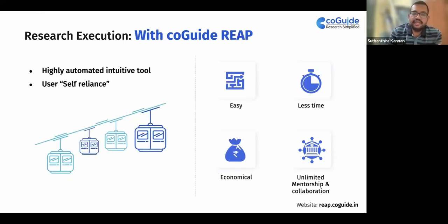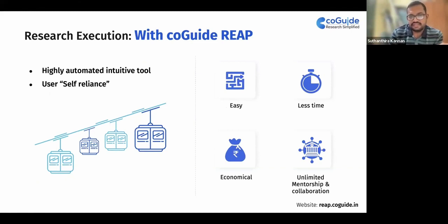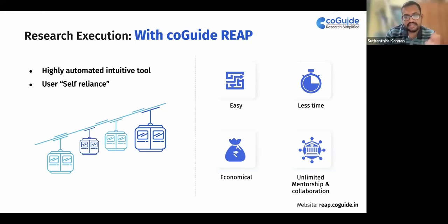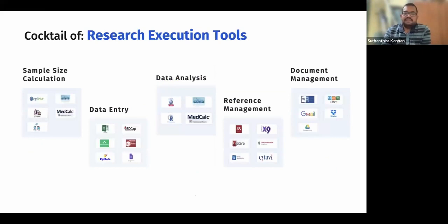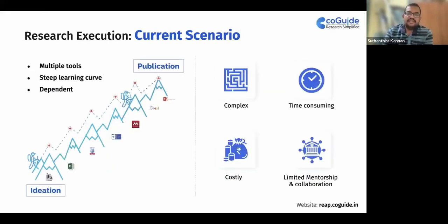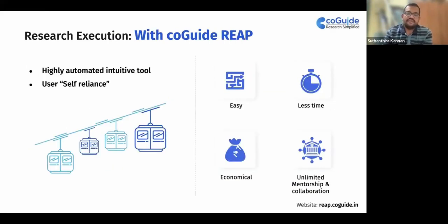There is one software called Co-Guide, available online, where all these functions are available in a single platform. Co-Guide covers all areas of research — sample size calculation, data analysis, and more. It is based on Python programming, so it is easy to use, less time-consuming, and economical. Collaboration and mentorship are also available if you subscribe through your institute. You can use either multiple softwares based on your feasibility, or use Co-Guide as an all-in-one solution.